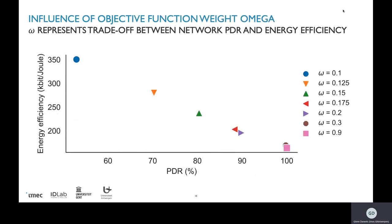The first result to explain is our omega parameter, which represents the tradeoff between network PDR and energy efficiency. A higher omega causes the model to allocate more slots, consuming more energy and reducing efficiency. A lower omega allocates fewer slots — the node sleeps more — improving efficiency but lowering PDR. As shown here, for lower omega values energy efficiency goes up but PDR goes down, while for higher values from 0.3 to 0.9, PDR is very high but energy efficiency is much lower.